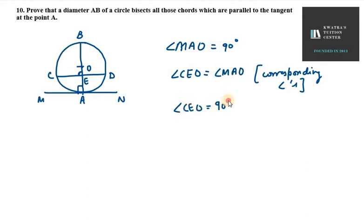And if it is 90 degrees, it means that OE bisects CD. Therefore, OE bisects CD.